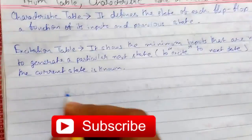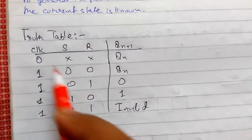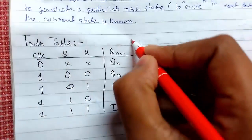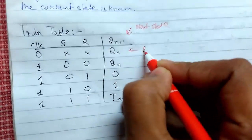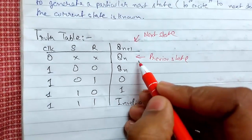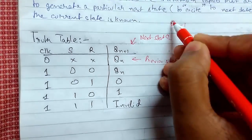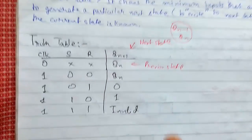The truth table we have already seen; I will just draw it again. So this is our truth table. We already know what clock, S, and R are. I have written qn+1, which represents the next state, and qn represents the previous state output. The invalid state we know is not used. We can also use qn-1 for previous state and qn for next state, but I used qn and qn+1 — both notations can be used.